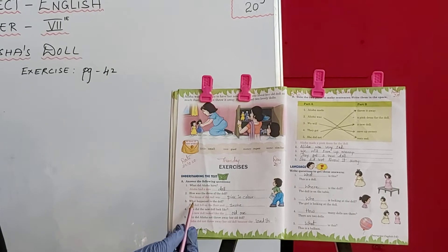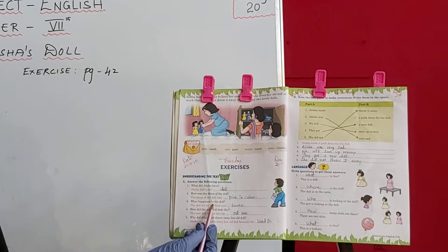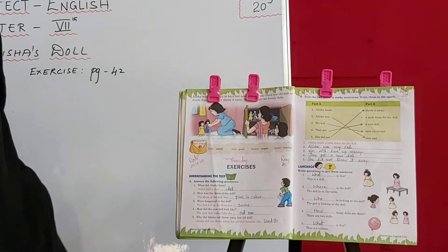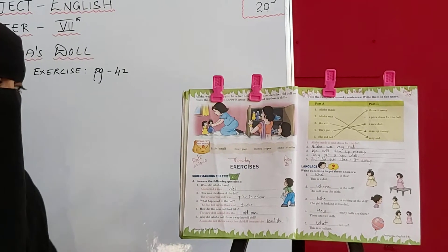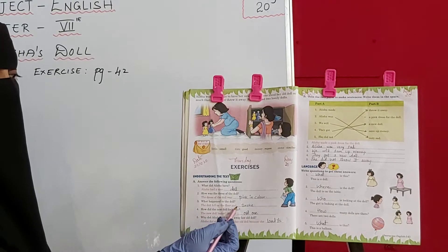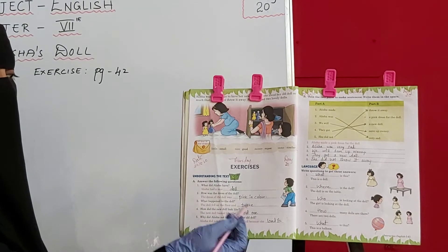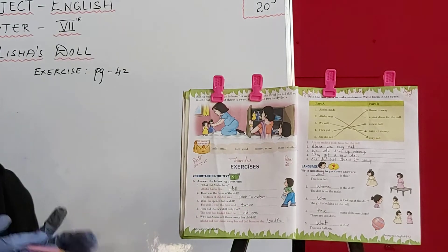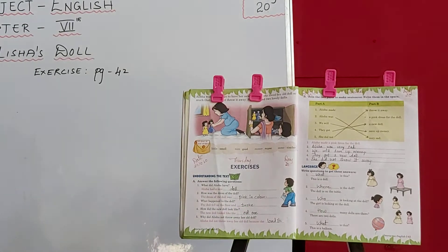Now next one: what happened to the doll? Doll ko kya hua? The doll fell on the floor and broke. Doll floor pe giri aur it was broken.